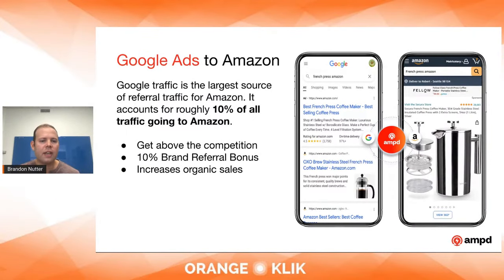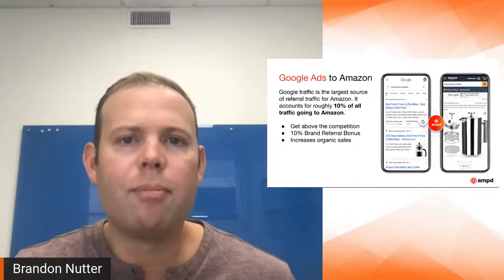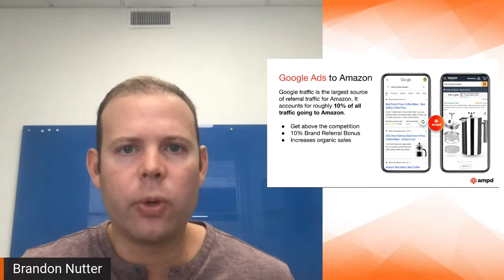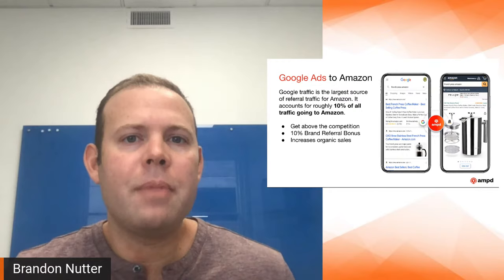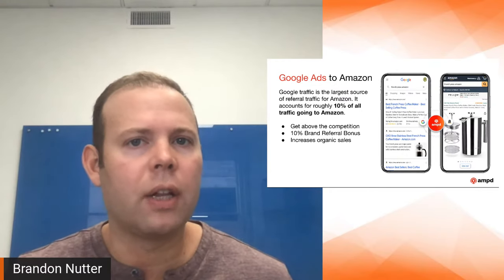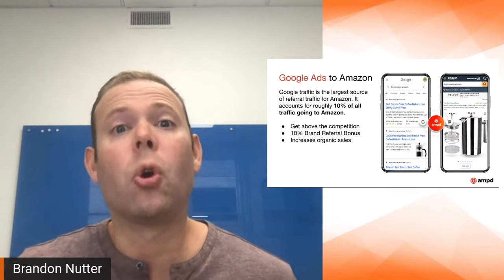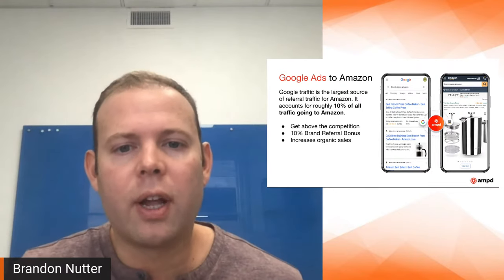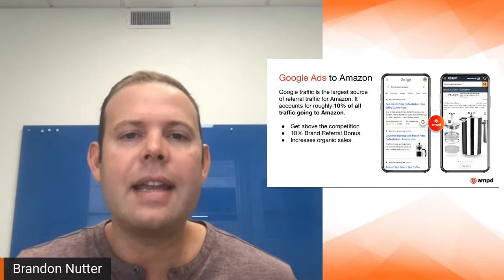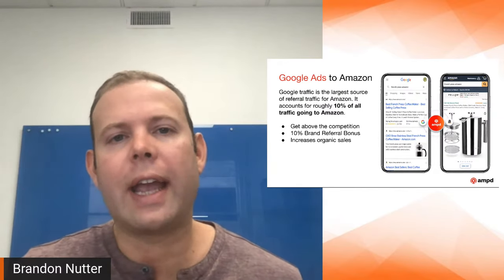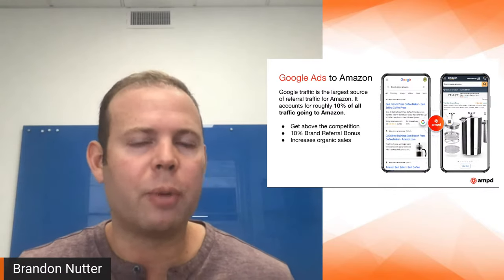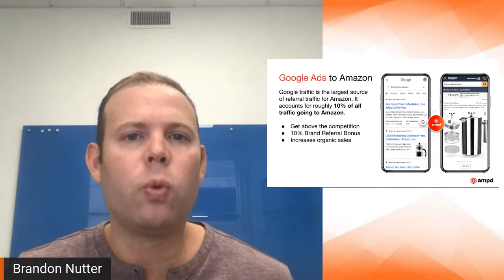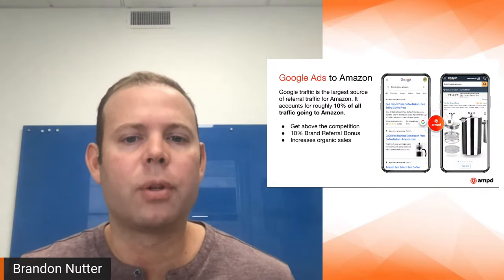The last benefit we see across the board is increased organic sales. When you have a multi-channel approach, it starts the flywheel for Amazon. Amazon takes note — you're getting clicks and high conversions on Amazon ads, you're also bringing external traffic from Google that's converting as well. All of a sudden you'll see organic rank increase, which directly results in an increase in organic sales. These are all good things to keep in mind when you're building a brand and thinking holistically about how to bring customers from every channel.